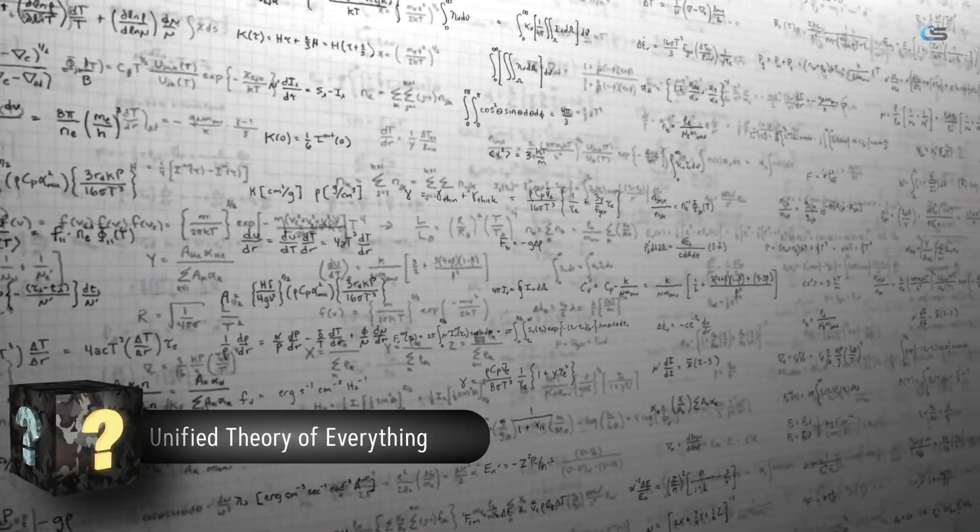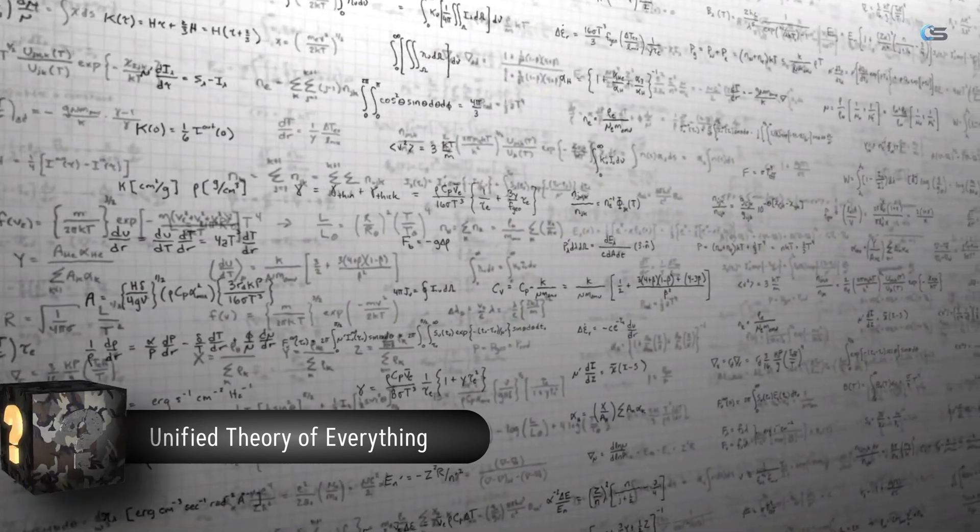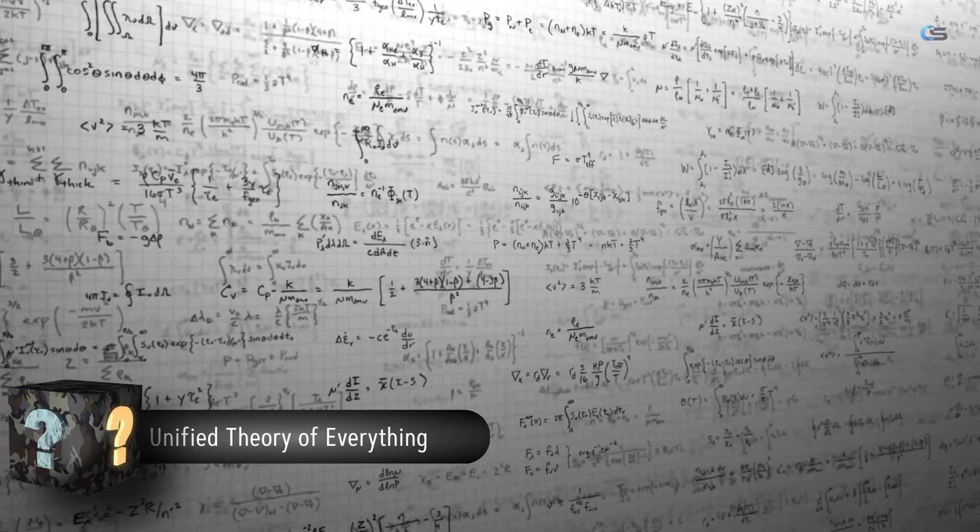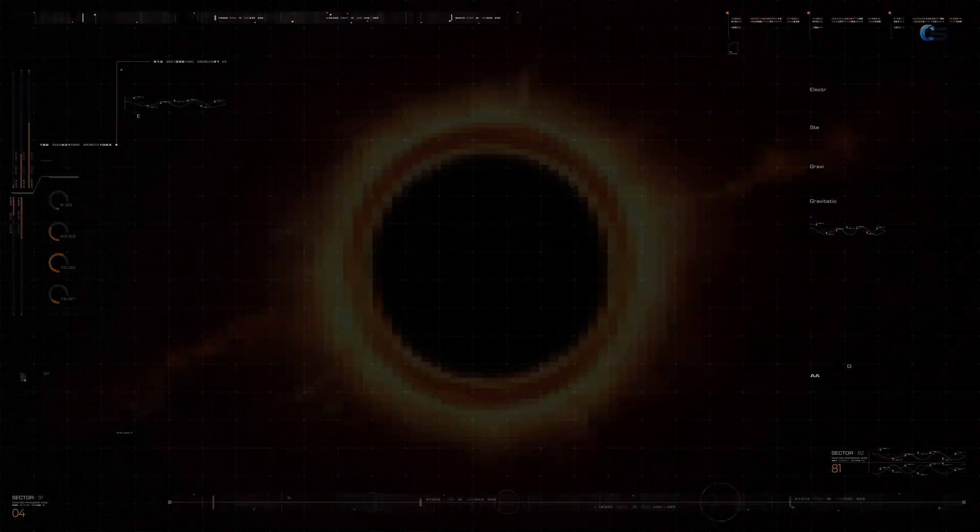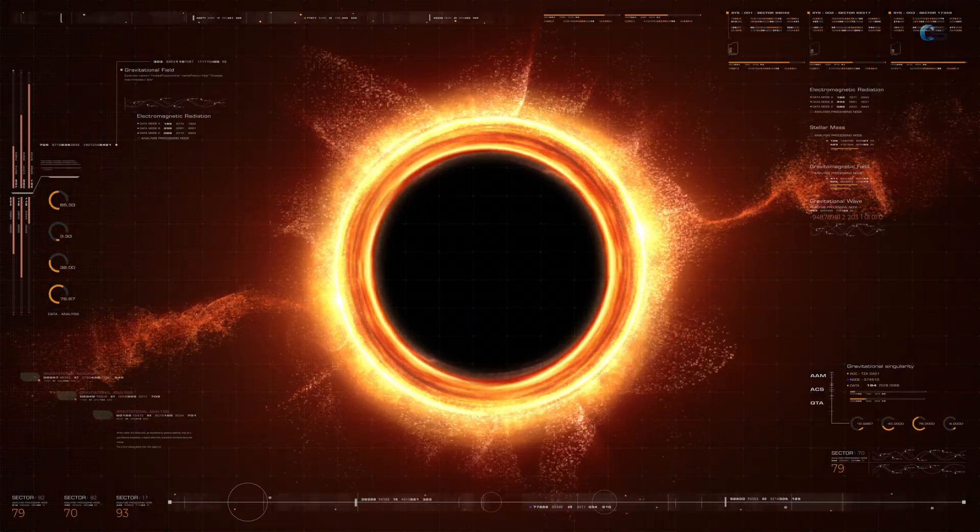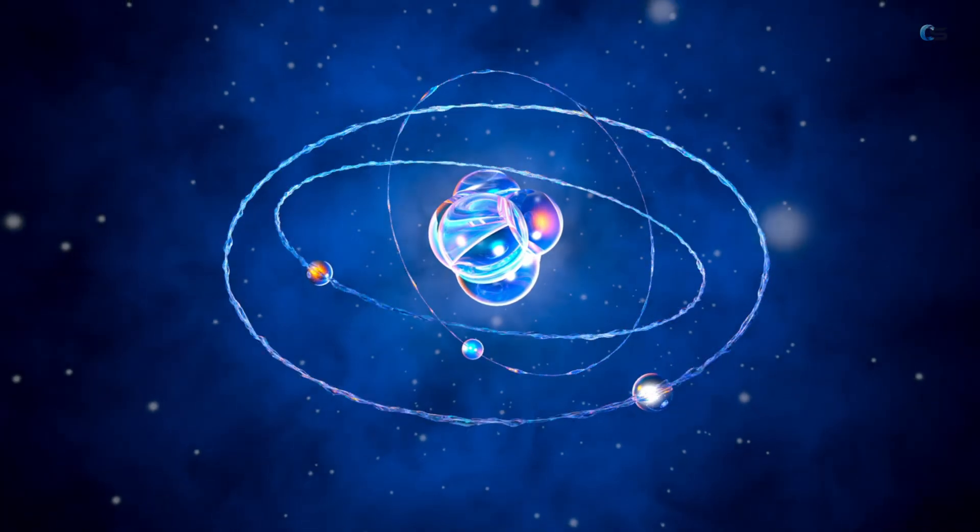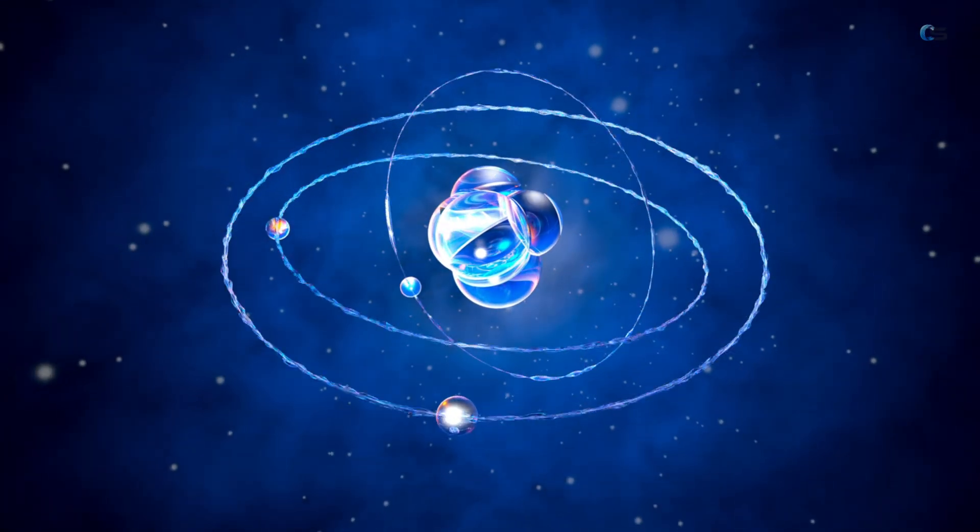Question number three. Unified theory of everything. Moving on to the grand quest for a unified theory of everything. Scientists are still on the hunt for a single framework that can explain all the fundamental forces and particles in the universe. It's a monumental task that involves combining general relativity and quantum mechanics. This question lies at the heart of modern physics. General relativity explains gravity on large scales, while quantum mechanics describes the behavior of particles on very small scales.